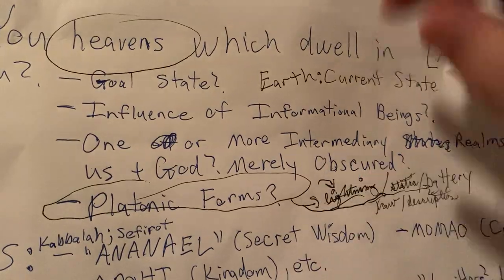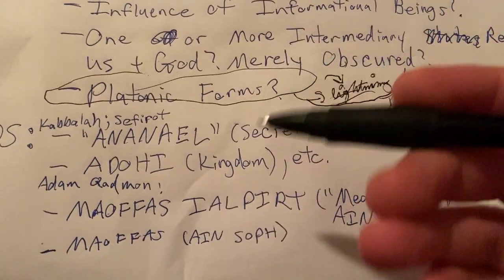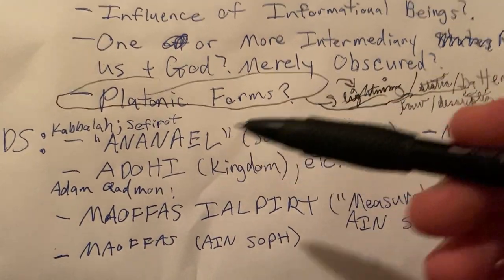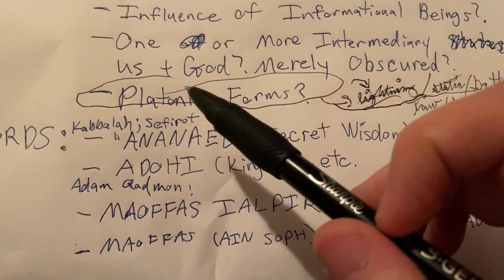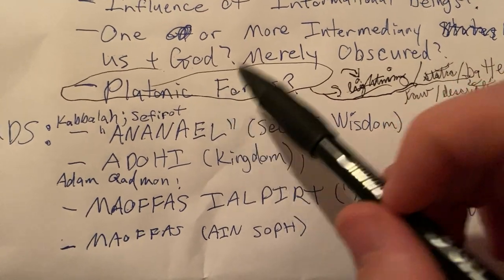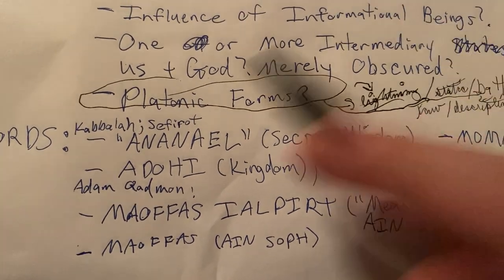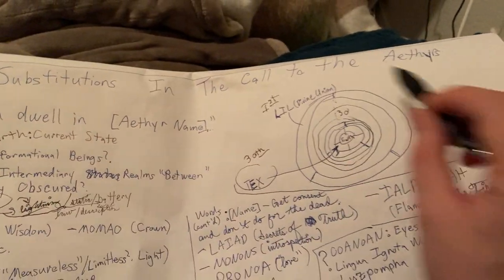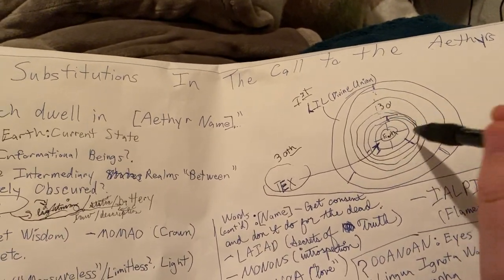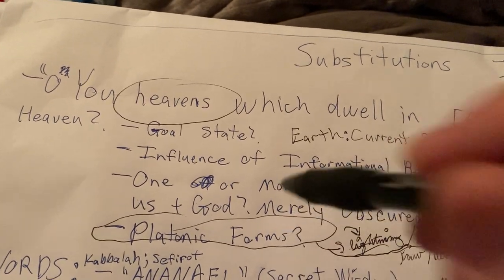We're trying to find this underlying platonic form that can then be shown as either lightning or static or this or that. That's the whole point of science — we try something, we have an idea, we test it, we see if the results match. Through this process of approximation, we eventually get down to the platonic form of electricity, or whatever the case may be. So that's an overall view of thinking about why you might want to make substitutions in the call to the aethers — what if it's not just a heaven, but the platonic form of a word?